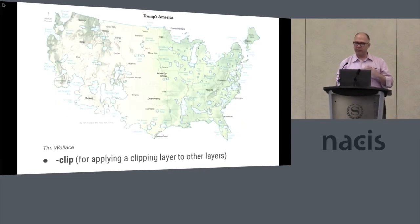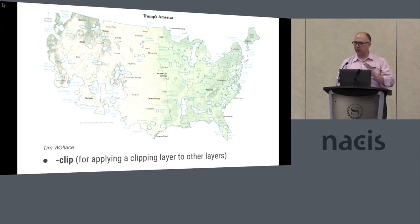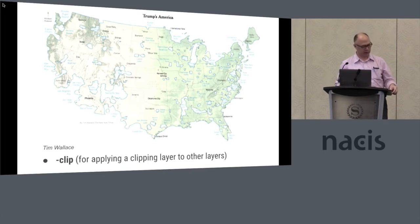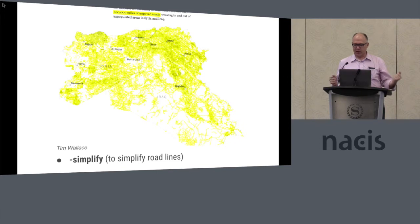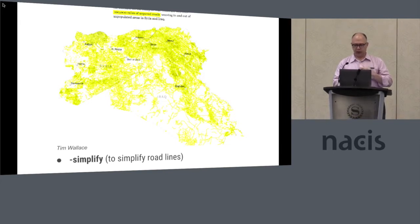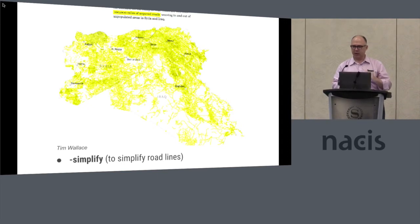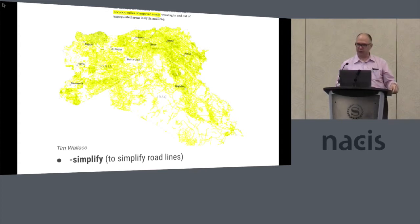Here's another map also by Tim. He used MapShaper's clip command to create these shapes, showing which parts of the country Trump won the popular vote, with a companion map for Clinton — exactly the inverse. Another Tim Wallace map shows roads in Iraq and Syria. He used the simplify command because the data was very complicated with a lot of vertices, so he wasn't able to work with it effectively in Adobe Illustrator — he simplified the lines so Illustrator wouldn't come to a grinding halt.